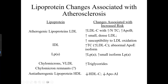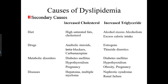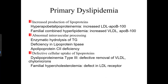All these types of lesions are associated with dyslipoproteinemias. Changes associated with increased CHD risk include increased LDL cholesterol, increased small dense lipoproteins, increased triglycerides, or decreased HDL. Secondary causes include diet, drugs, metabolic disorders, and disease. Primary dyslipidemia involves increased production of lipoproteins, abnormal intravascular processing, or defective cellular uptake of lipoproteins.